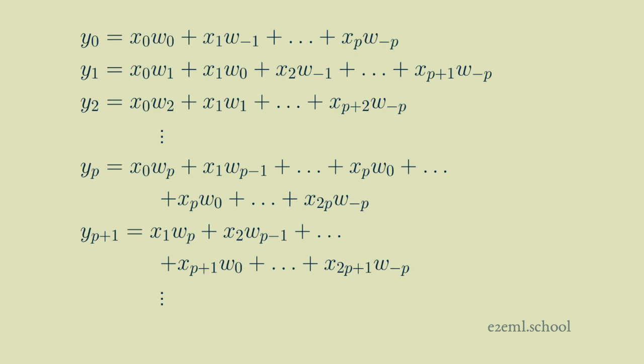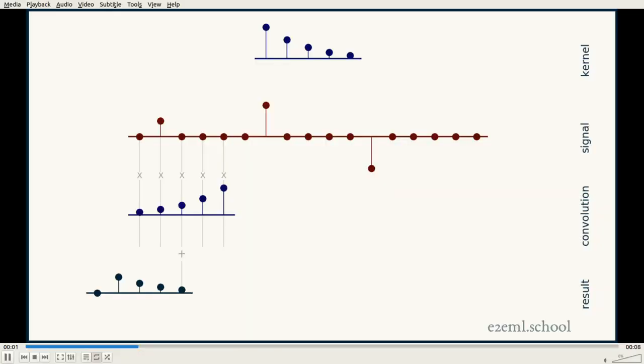So let's start by jumping into the middle. We'll look at y of p, so our result at the position p. This means that our kernel fully overlaps the signal x. So it goes from minus p to plus p, and each one of those aligns with one element of the signal.